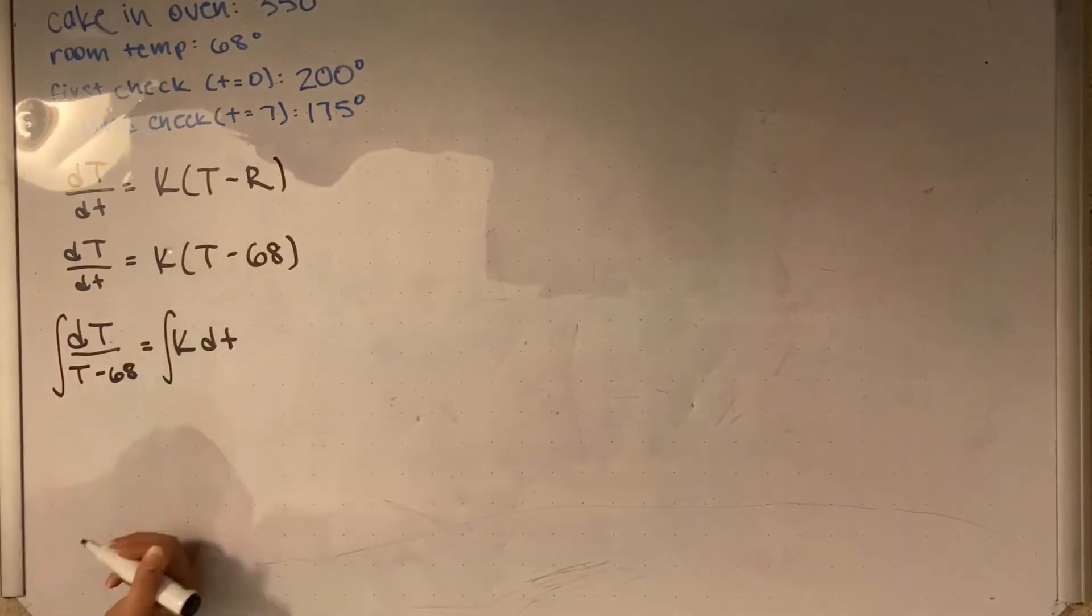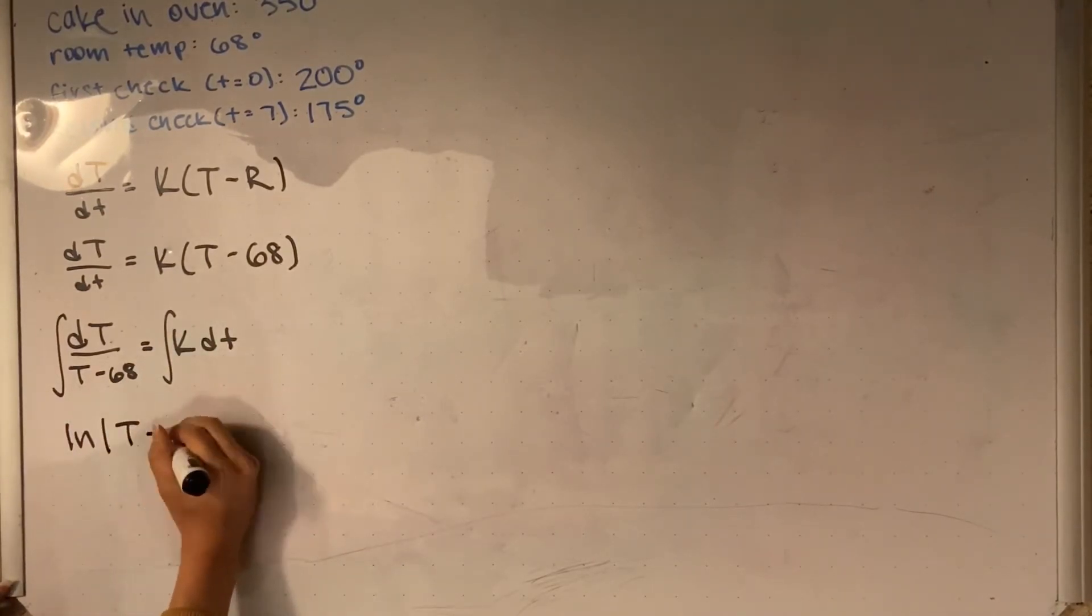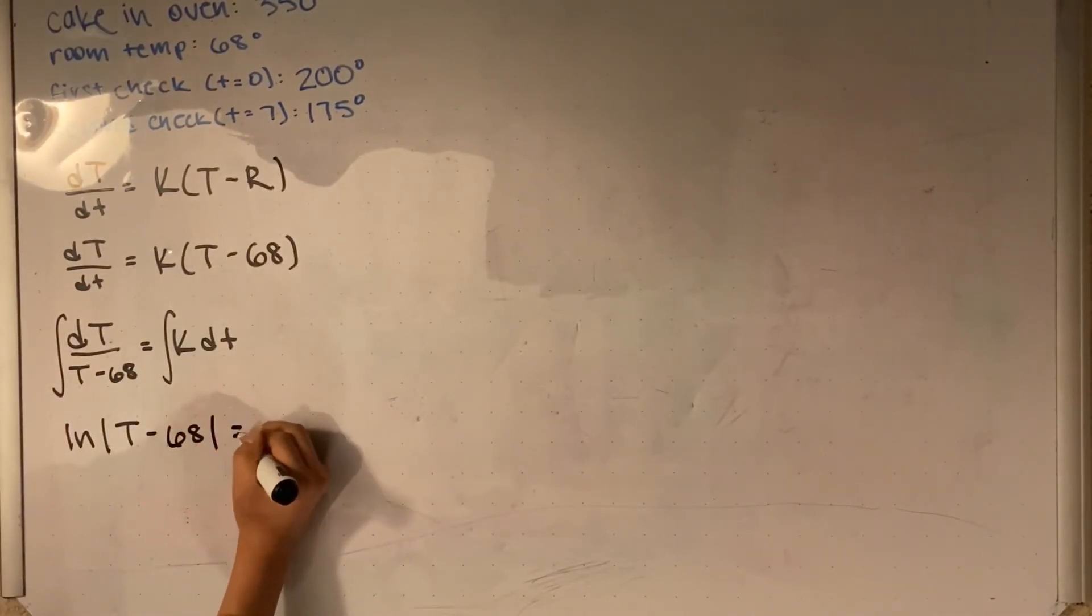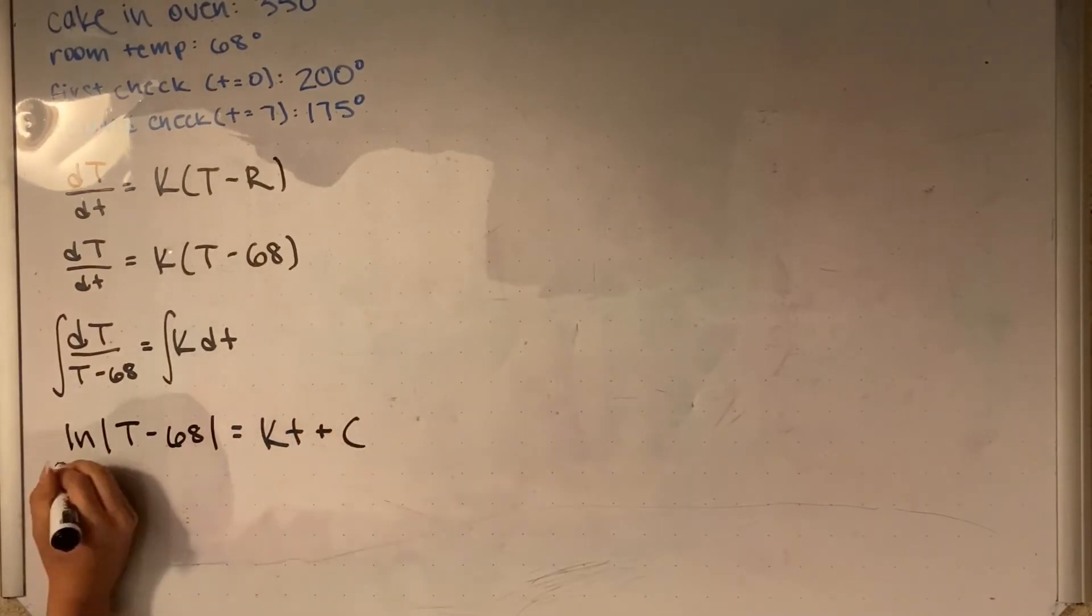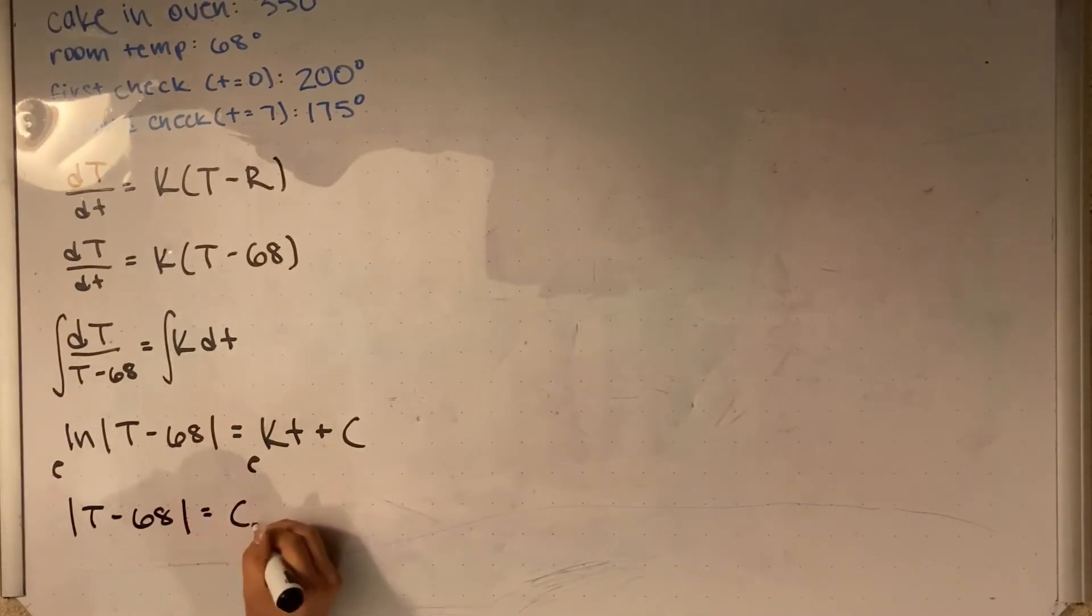We then integrate this, getting natural log of the absolute value of t minus 68 equals kt plus c. To get rid of the natural log, we can make each side the exponent of e. In simplifying, we finally get that t equals c2e to the kt plus 68.